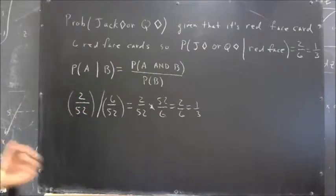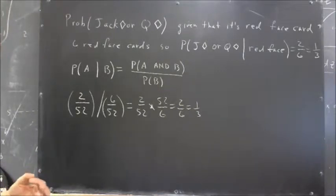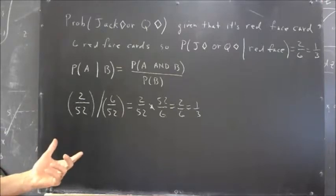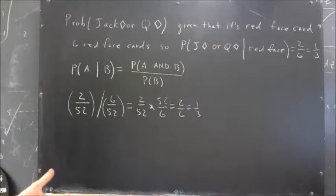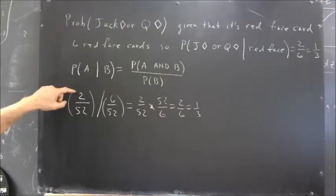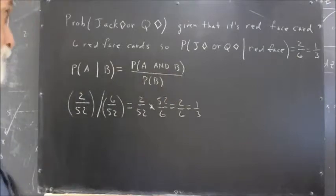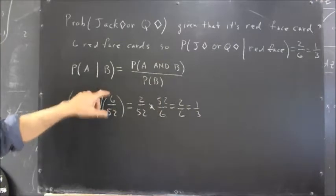The probability of a Jack or Queen of Diamonds and a red face card is — I think I've got a mistake here. Actually, I thought I had a mistake and didn't. The probability of a Jack or Queen of Diamonds and a red face card is just two. The Jack and Queen of Diamonds are red face cards. There are two cards out of the 52 that are Jack and Queen of Diamonds and red face cards. And there are six red face cards, so the probability of a red face card is six out of 52.